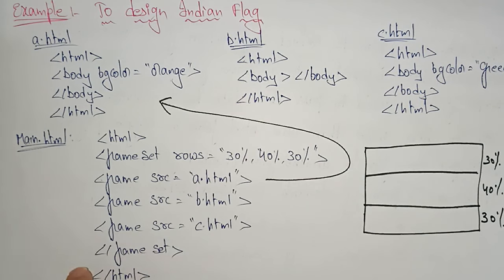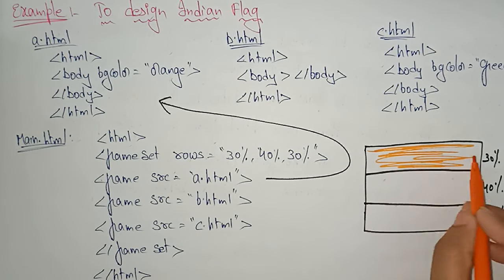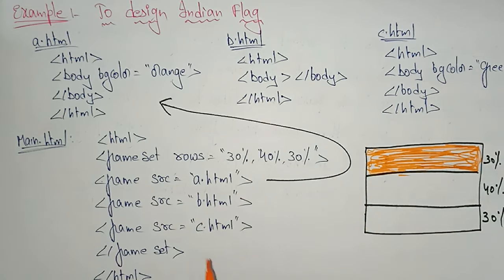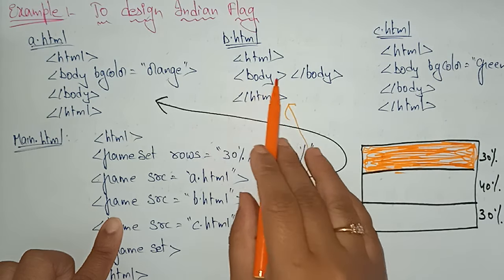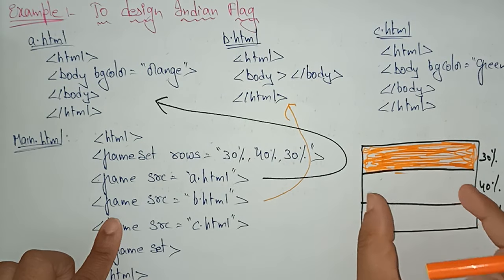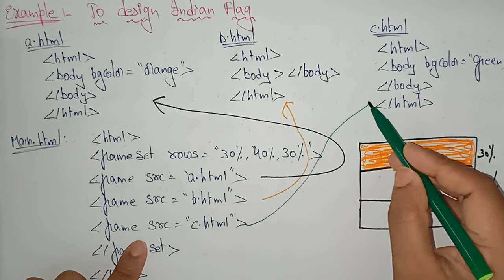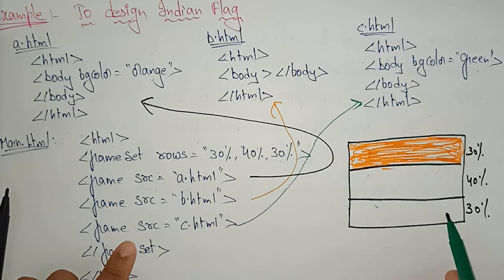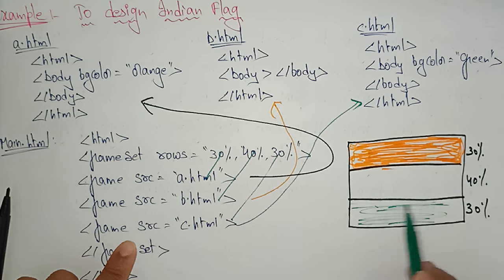In a.html, the body background color is orange — so that frame appears entirely in orange. The second frame is b.html — I didn't write anything in it, so the page remains white by default. The third frame, c.html, has background color green. So we get 30% orange, 40% white, and 30% green — the Indian flag colors.